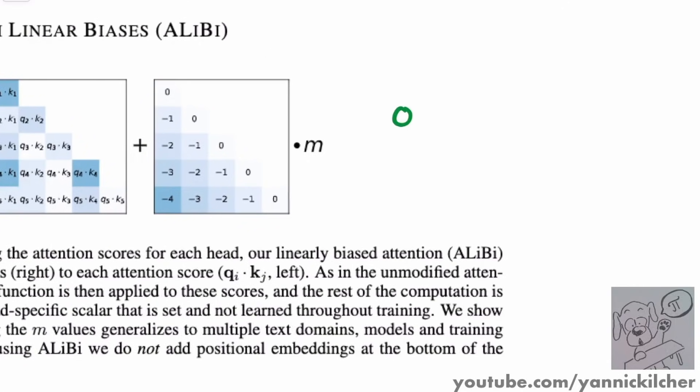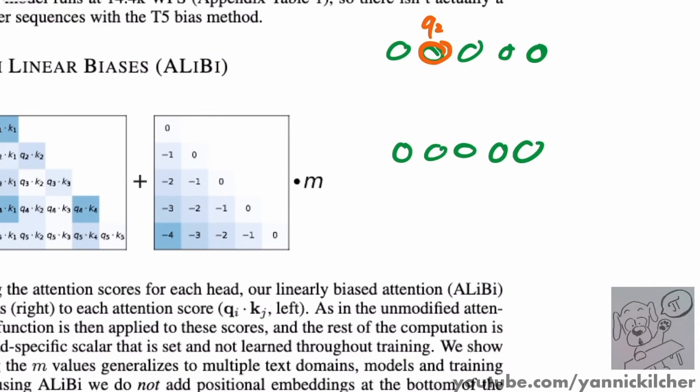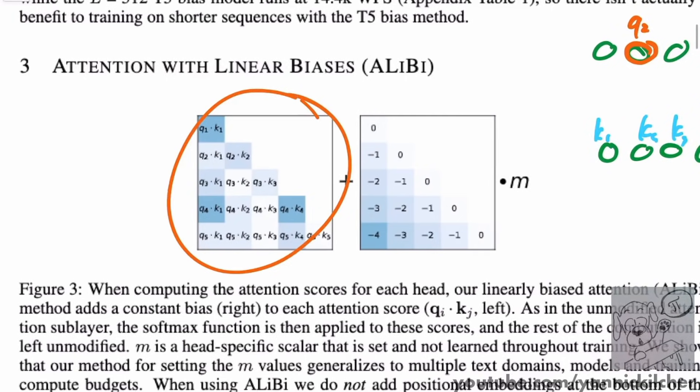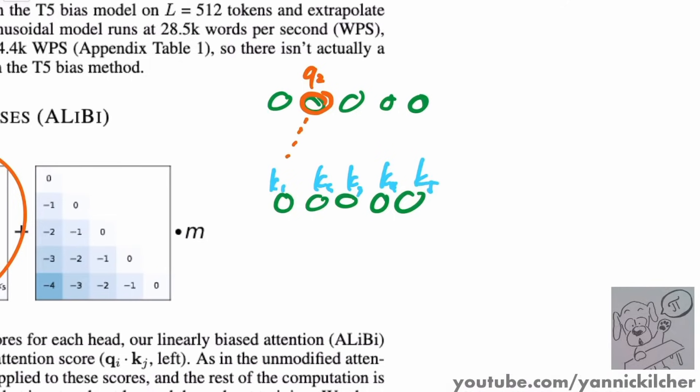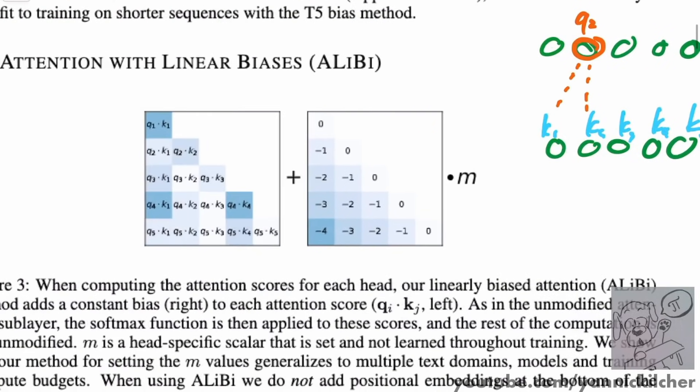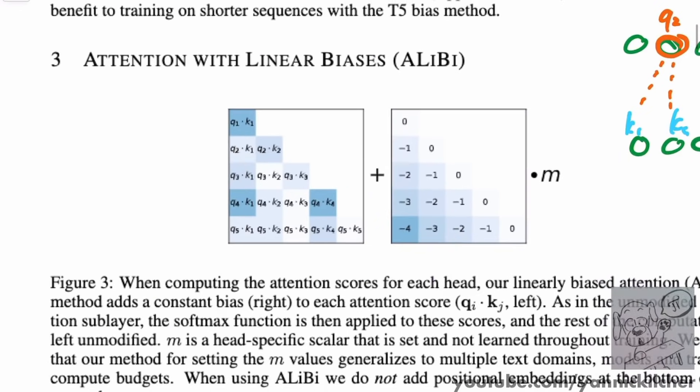But consider, again, our model of transforming a sequence to another sequence and just view one single token like this token right here. This token produces Q2, query two, and it pays attention to all of the keys in the input sequence, right? This is the attention mechanism. The query is multiplied with all of the keys to decide where it should get its information from. Now, if we simply do it like this, and this is with the causal attention, it can only actually pay attention to all the keys that come before it. So query two would be multiplied only by key one and key two and not key three because it can't look into the future.